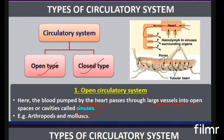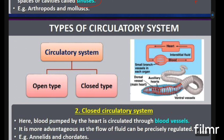Examples of open circulatory systems include arthropods. In the closed circulatory system, blood is pumped through closed blood vessels and does not come out anywhere. The heart pumps blood through closed vessels throughout the body, and it returns to the heart via blood vessels. This system is more advantageous — the amount of blood flow and exchange can be regulated accurately. Examples include annelids and chordates.